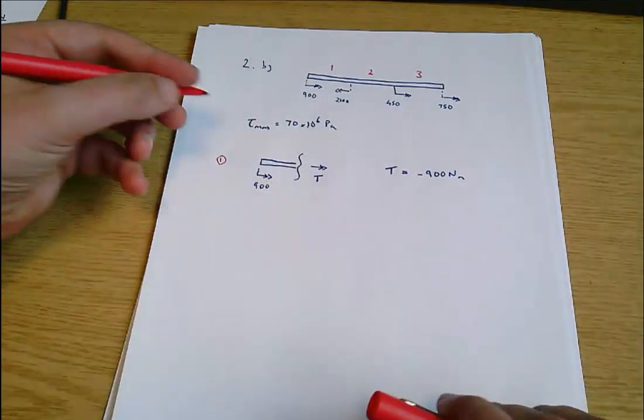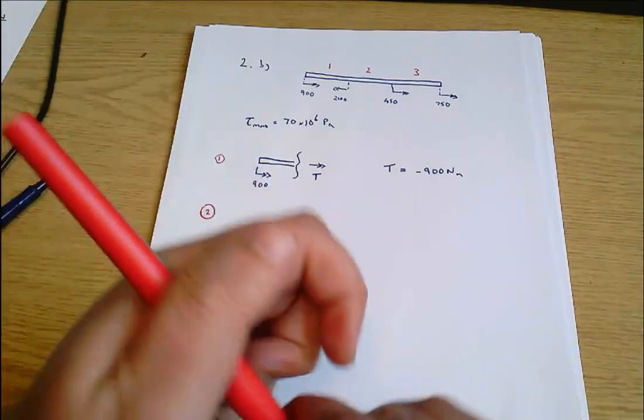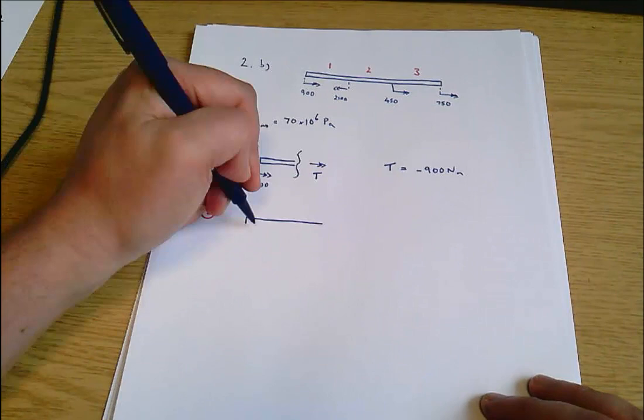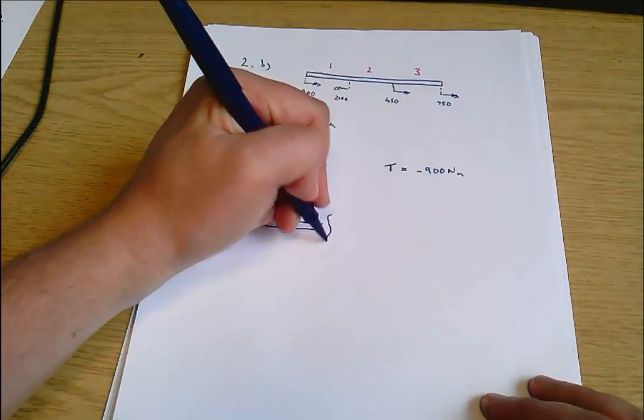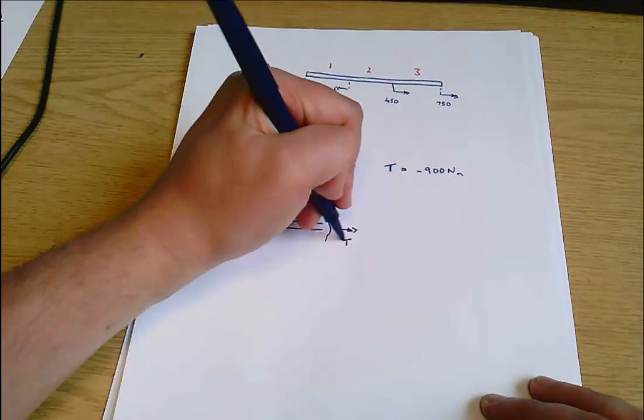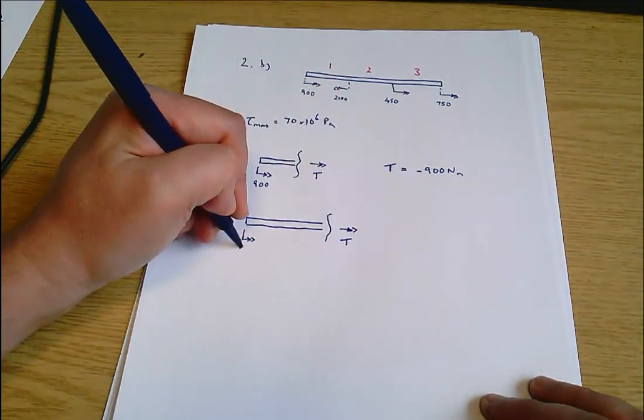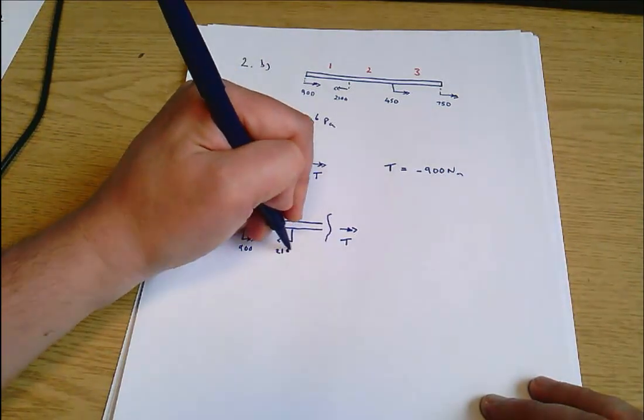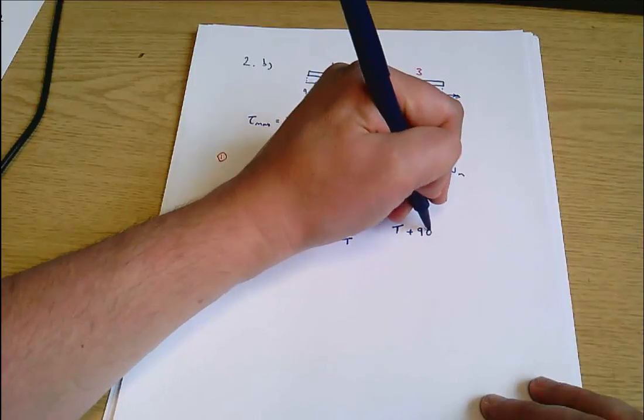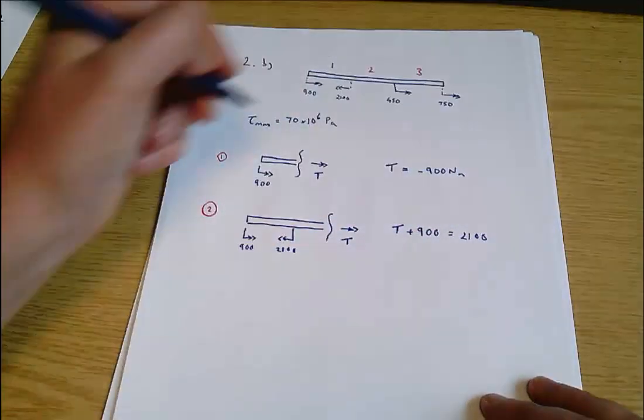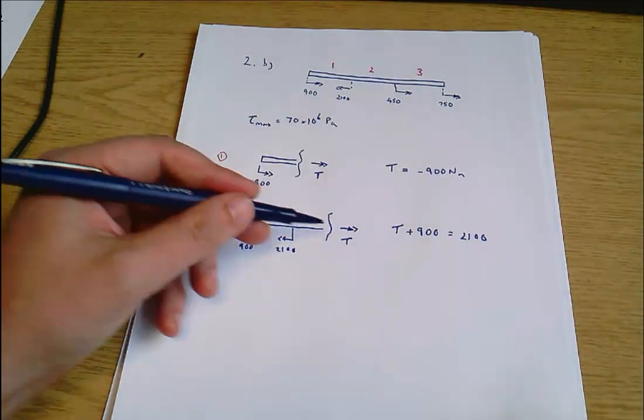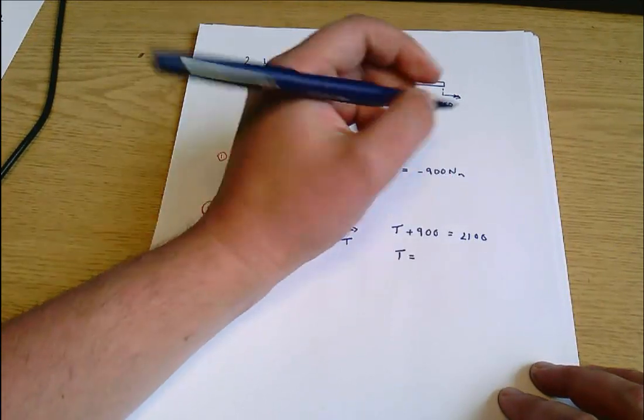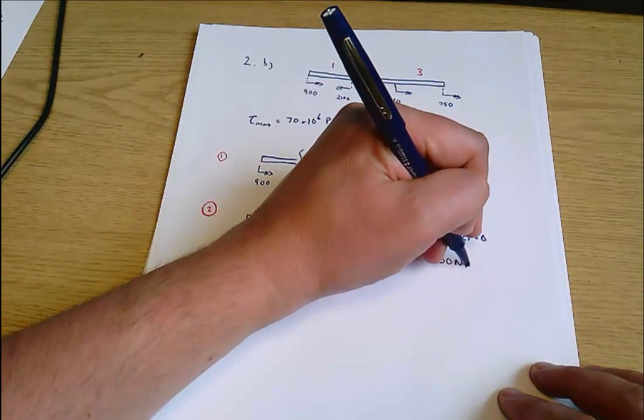In region two, we get T plus 900 equals 2100, and that's with all the right hand rules pointing to the right equaling all the right hand rules pointing to the left. T equals 1200 newton meters in that region.